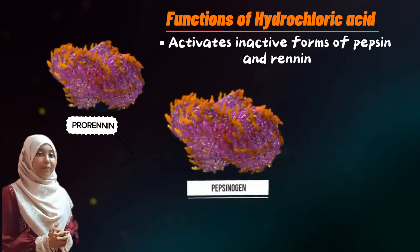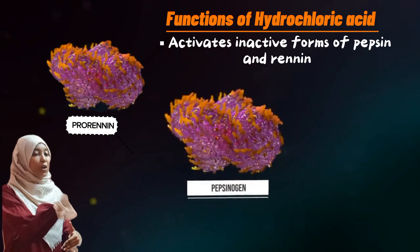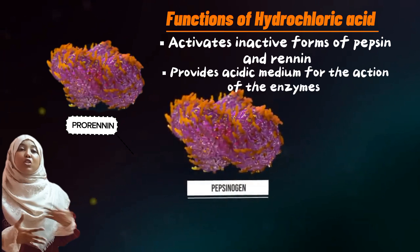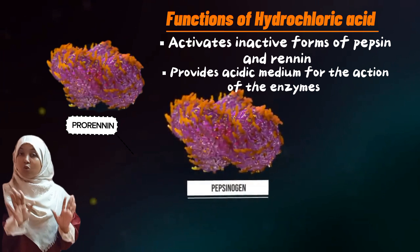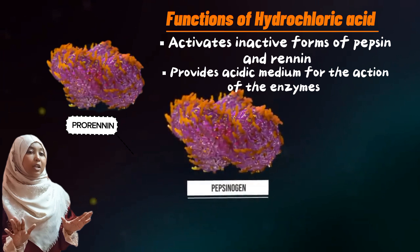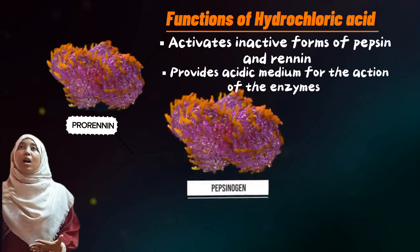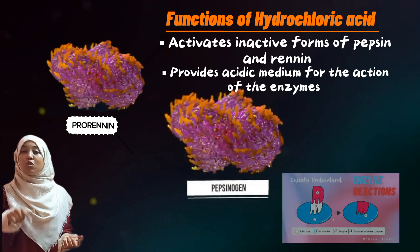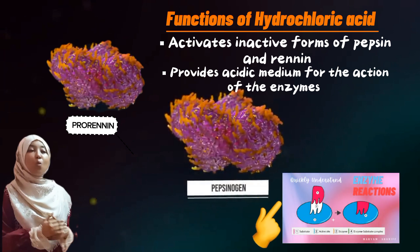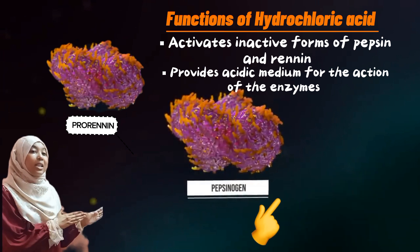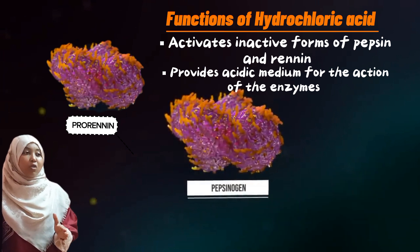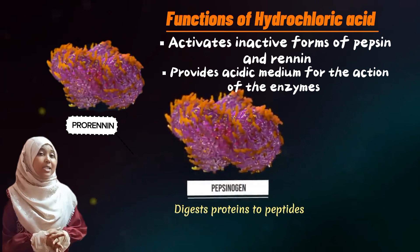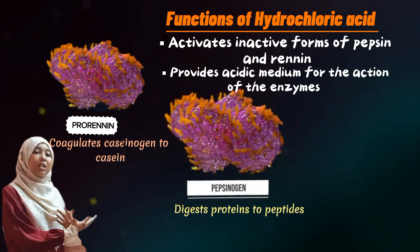The inactive forms of these two enzymes are pepsinogen and pro-rennin. These are then activated to the active forms pepsin and rennin. The third function of hydrochloric acid is that it provides a suitable medium — an acidic pH — for the functioning of these enzymes. Pepsin and rennin require an acidic pH in order to function. As for their roles: pepsin breaks down proteins to peptides, and rennin breaks down caseinogen to casein, which is a protein found in milk.